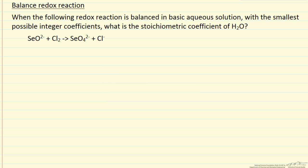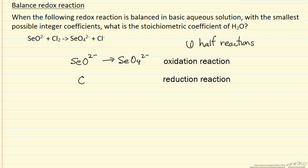The procedure we're going to use is first to write down half reactions. Essentially one is an oxidation and one is a reduction. Here is one half reaction and the other is the oxidation state of chlorine changing.